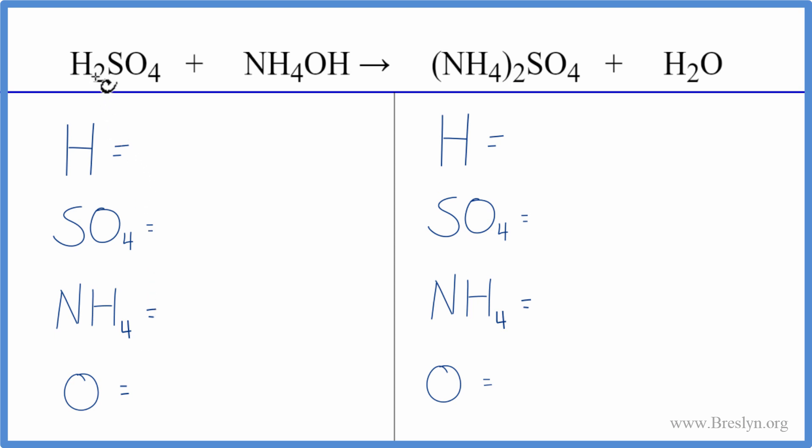So we count our hydrogens up. We have the two here, plus we have this one here. That gives us three. We're going to ignore these because they're part of the ammonium ion. We have one sulfate, one ammonium ion, and then we have the one oxygen here.